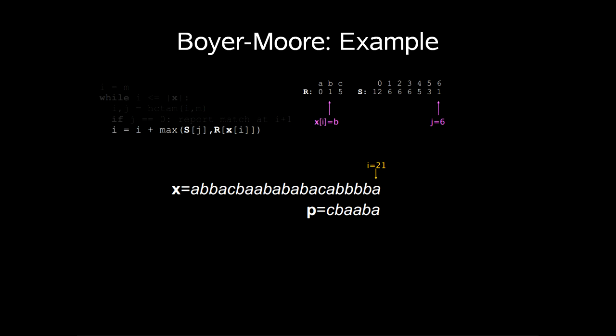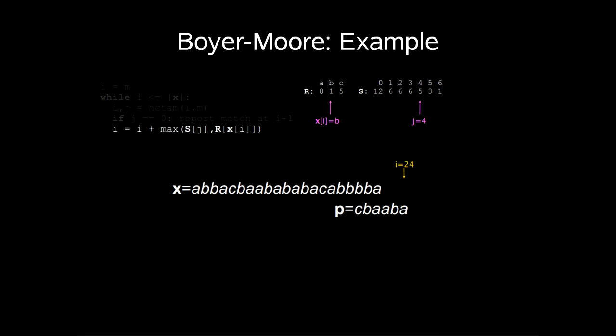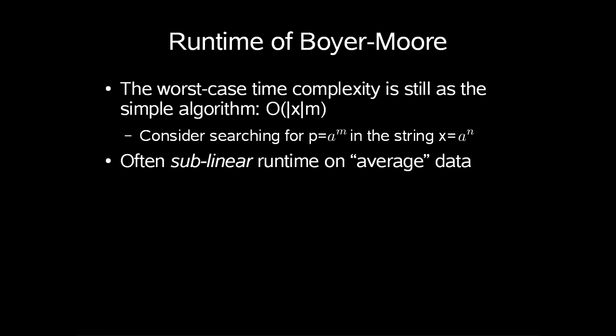Let's look at the number of comparisons we did in this example. It actually turns out we did 16 character comparisons with a length of 21. We actually found all occurrences of p and x in sub-linear time. However, the worst case time complexity is still as the simple algorithm, order length of string times length of pattern. If you consider searching for a pattern consisting of m a's in a string of n a's. What we see in practice is that Boyer-Moore often runs in sub-linear time on average.